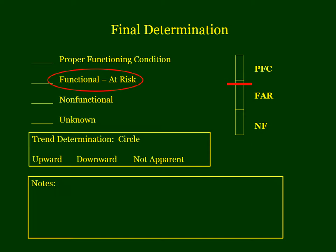If you rate a riparian area at functional at risk, you then want to look at the trend — what is the apparent trend and what do you think is really happening? If you think the trend is upward, that's a really good sign because perhaps in a year or two it will cross the line and become PFC. Make good notes that give you an indication of trend, as those are just as important as the final rating.